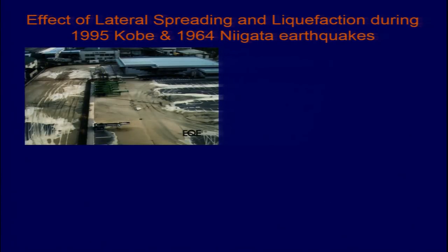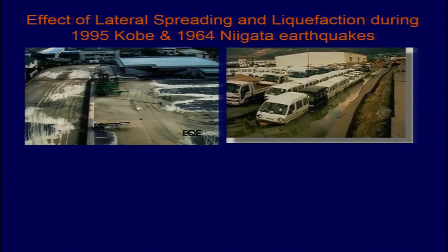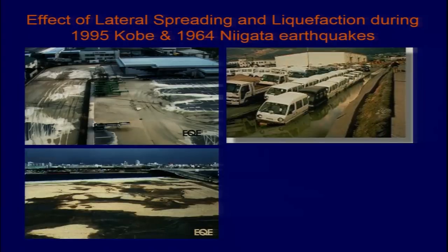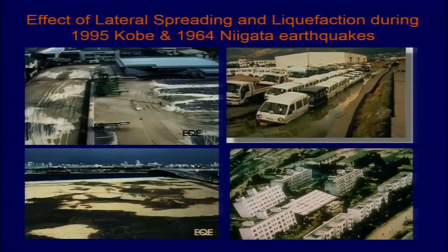This is an effect from the 1995 Kobe earthquake. The magnitude was not so large, but the damage experienced during 1995 Kobe and 1964 Niigata earthquake was massive because of liquefaction. These pictures show the effect of liquefaction and the tilting of buildings — complete tilt because of the loss of shear strength of liquefiable soil.